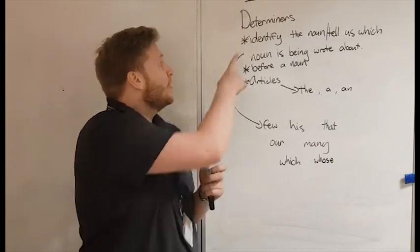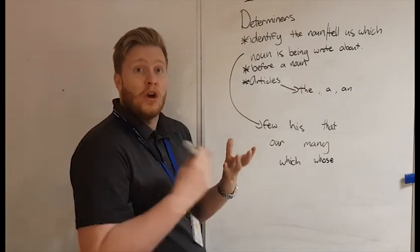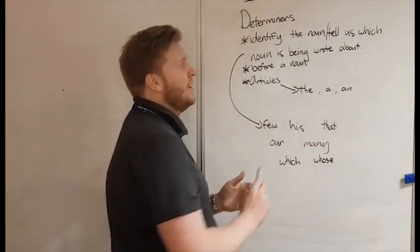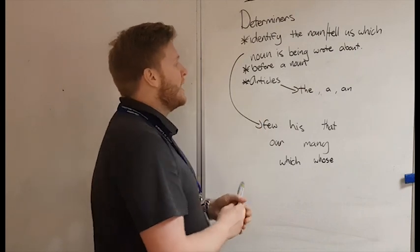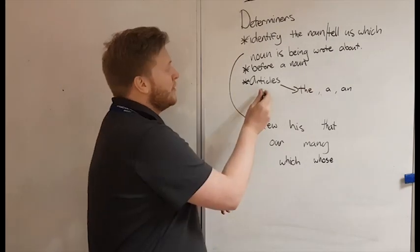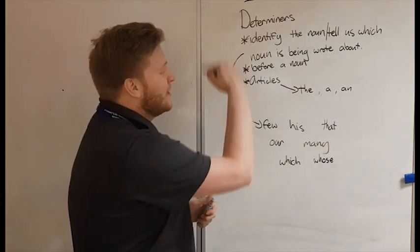And here we are looking at determiners. Now determiners identify the noun or determine which noun we're talking about, tells us which noun is being written about, comes before a noun, and the most common determiners you've found are what we call articles, which are the, a, and an.